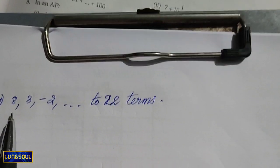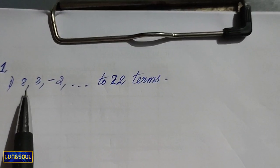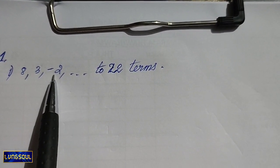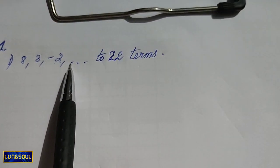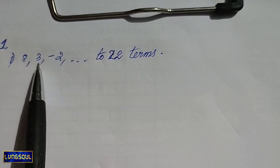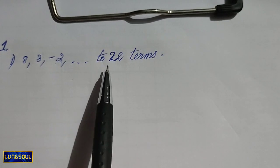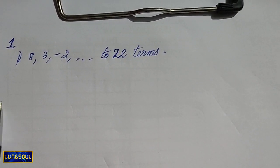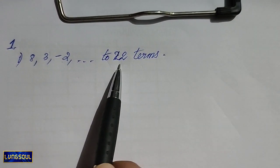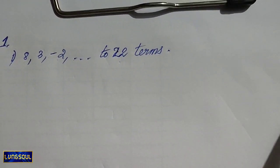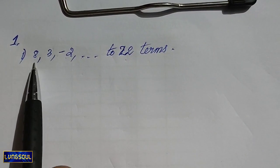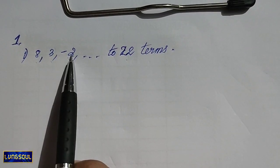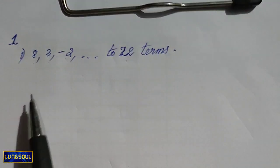This is an arithmetic progression. The terms are: first term, second term, third term — 8, 3, and negative 2.